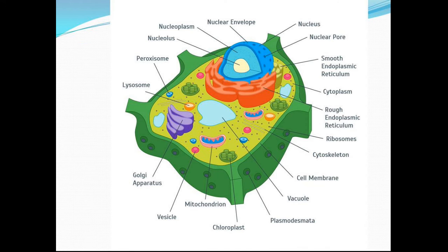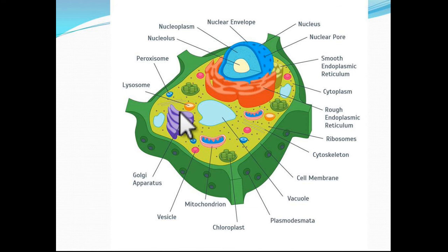Coming on to all 3 of them — lysosome, peroxisome, vacuole — children, just find out in the diagram where they are. Lysosome is there, peroxisome is there, and you can see vacuole is there.